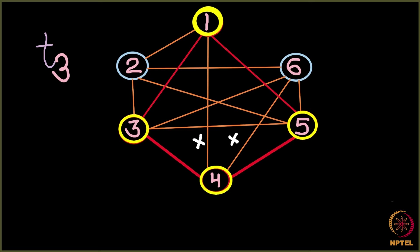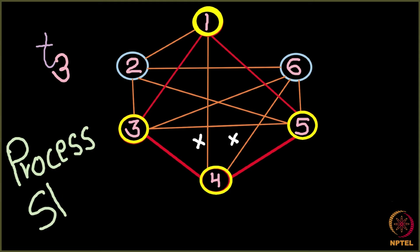On day 4, there are 6 people, of which 4 have recovered and 2 are susceptible. The infection gets over because for the process to continue, we need a red node — an infected node — but there is none. So the process stops. This was one simulation with Ti equal to 1, where every node remains infected for 1 day.